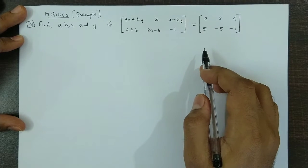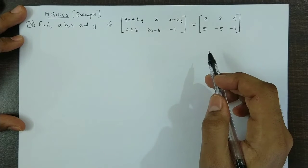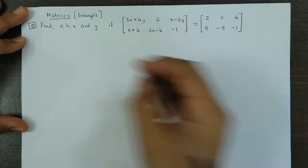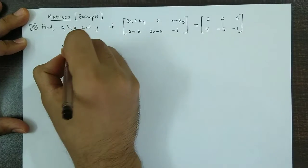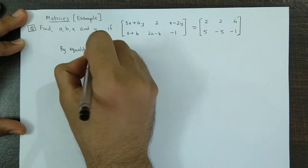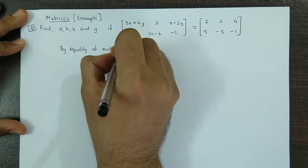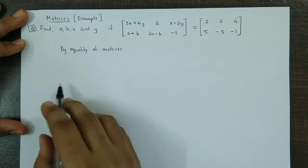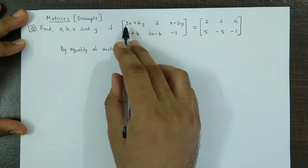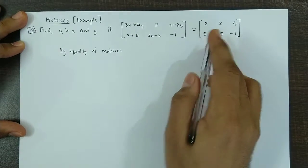We can apply the property of equality of matrices: if two matrices are equal, their corresponding elements are also equal. By equality of matrices we obtain certain equations, which we solve to get the values. Equating the first row, first column element: 3X plus 4Y equals 2. We call this equation 1.